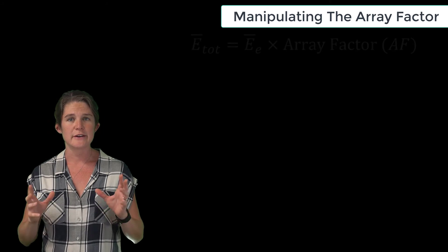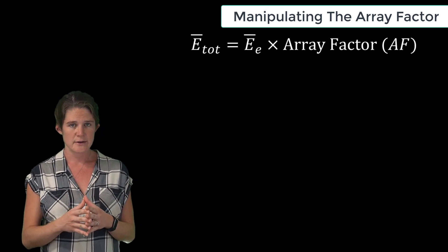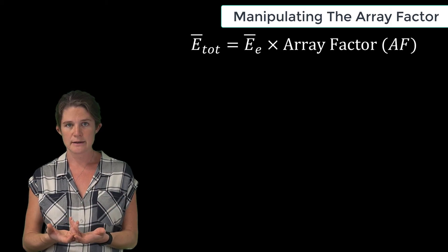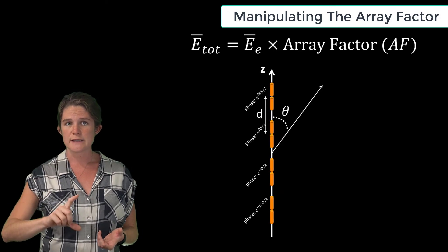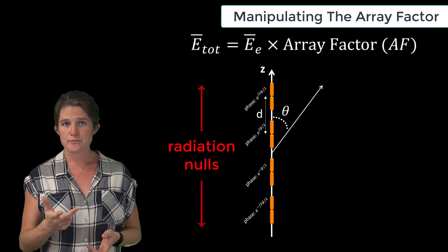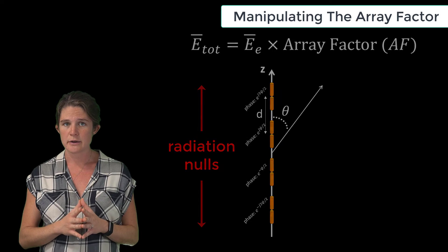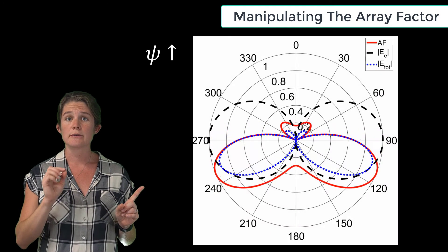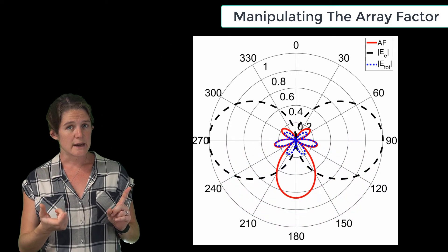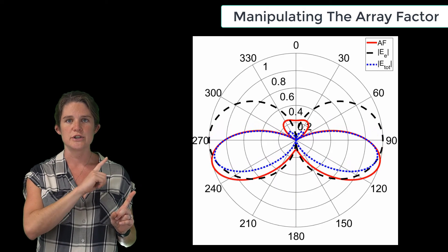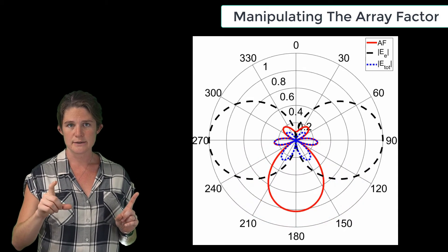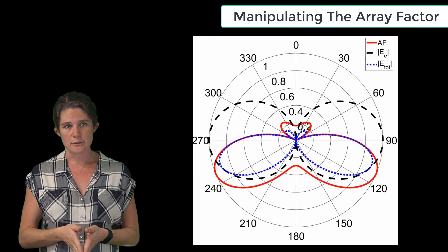It is important to remember that the array factor can only scale the antenna pattern. Don't try to steer a beam using the array factor into a direction that the individual antennas can't radiate. A dipole antenna array arranged vertically along the z-axis will never radiate straight upward or straight downward, no matter what array factor it has, because the antenna radiation in those directions is zero. Notice here, though the array factor shown in red steers the beam increasingly downward, the actual array radiation pattern — if the array is built of dipoles, shown in dashed blue — is scaled by the radiated electric field of those dipole elements, shown in dashed black, and is totally suppressed in the downward direction.